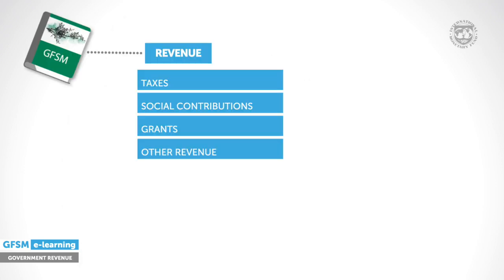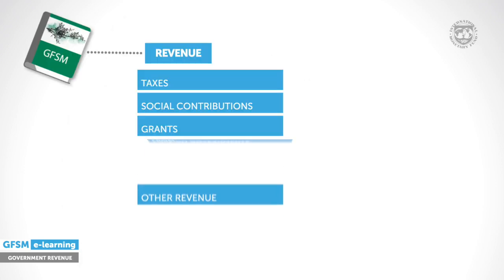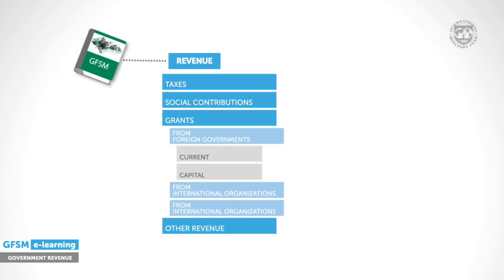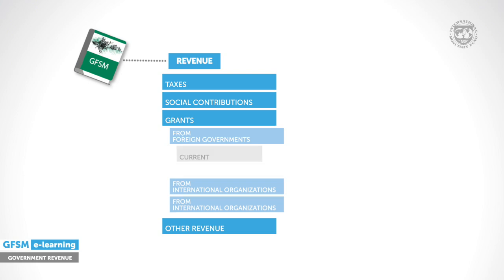Grants refer to transfers in cash or kind from foreign governments, other government units or international organizations. These may be ongoing or one-off — in other words, current or capital grants. The transfer of the donated asset, for instance, will be recorded as a capital grant in kind.